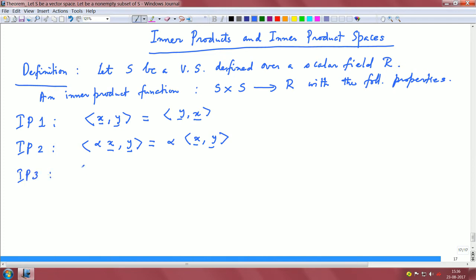We have the third property, which is the distributive property. We take the sum of two vectors and we take the inner product with another vector. The inner product of x plus y with z equals the inner product of x with z plus the inner product of y with z.